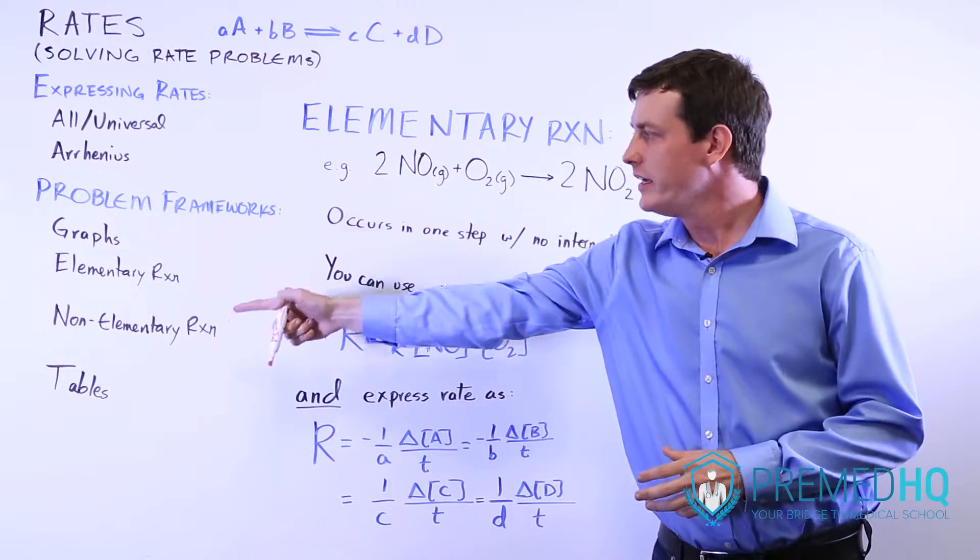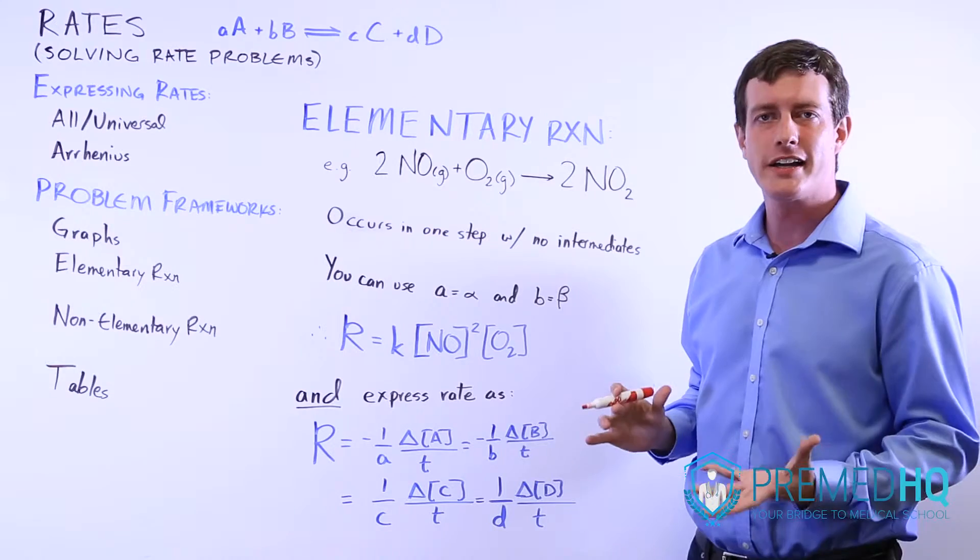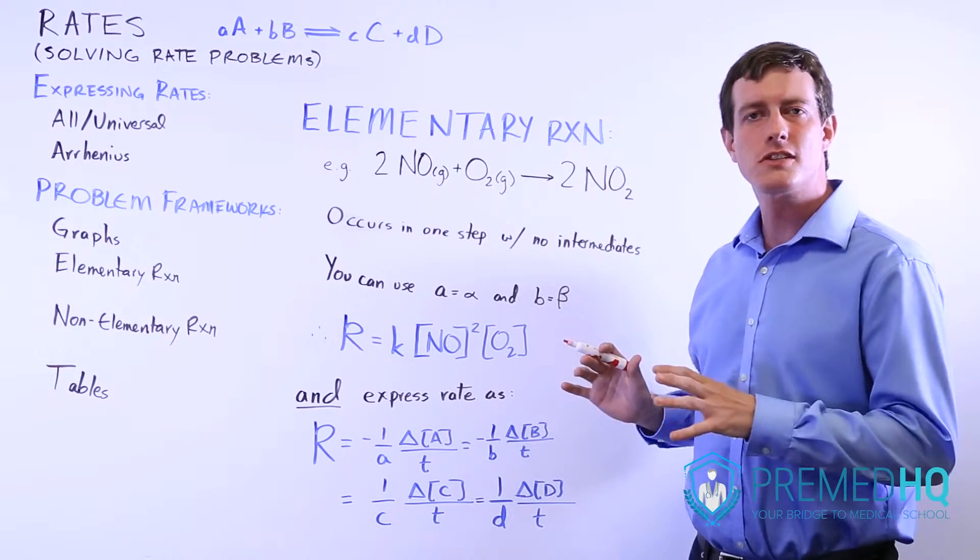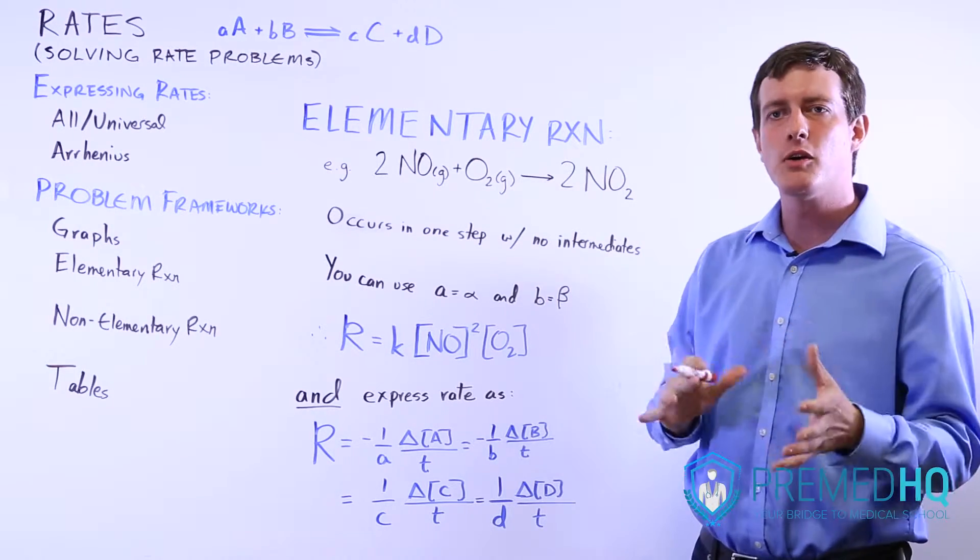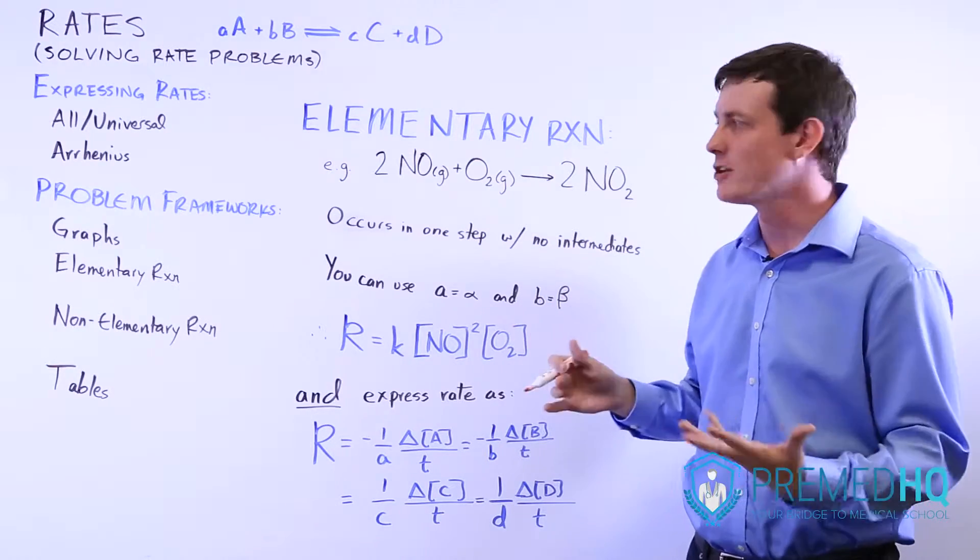The E in double agent refers to elementary reactions. An elementary reaction is one that occurs in a single step without multiple sub-steps and without any intermediates being formed along the way.